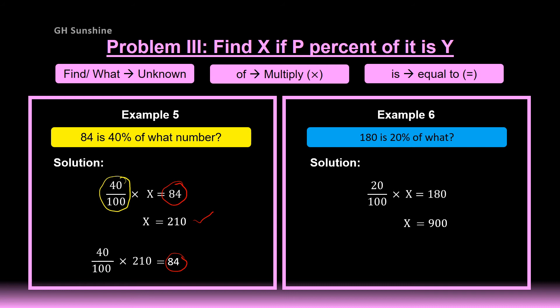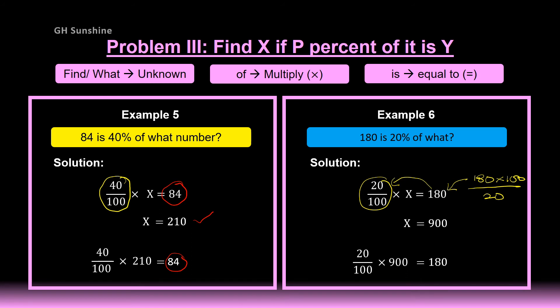How to calculate 900? From the equation, 180 times 100 divided by 20 gives 18000 divided by 20. Substituting back to check: same answer. Therefore X equals 900 is the correct answer for Example 6.